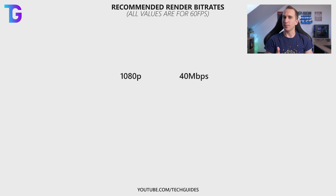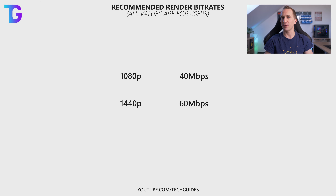Because of that I also tried to figure out the optimal bitrate after which point you're not really seeing much visual improvement on the final product on YouTube. At 1080p I would recommend a bitrate of 40 megabits per second or 40,000 kilobits per second. At 1440p I would recommend 60 megabits per second or 60,000 kilobits per second. And at 4K I would recommend between 80 and 100 megabits per second or 80,000 to 100,000 kilobits per second.